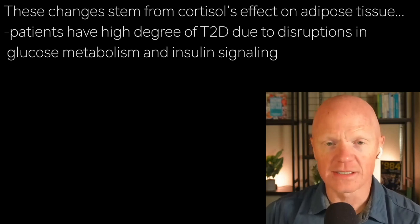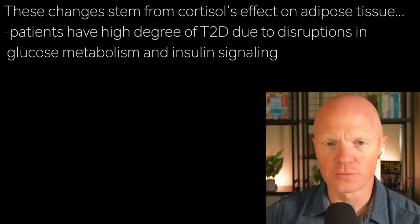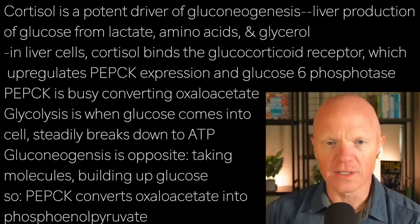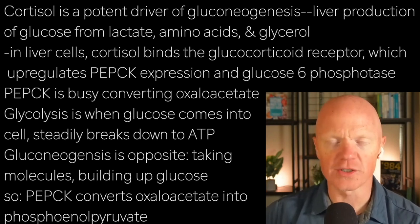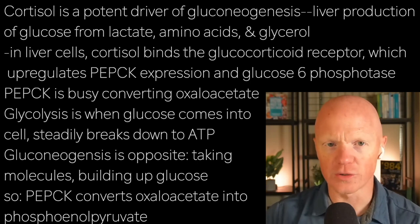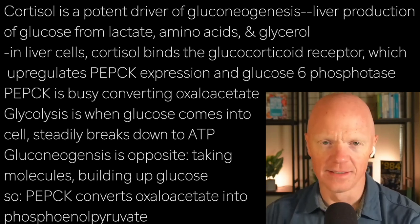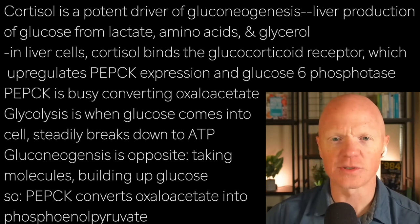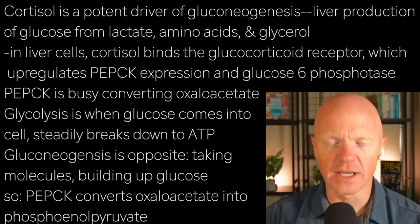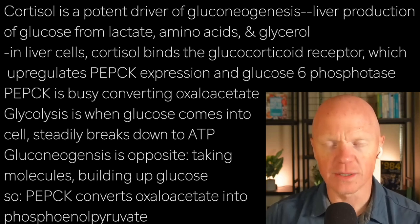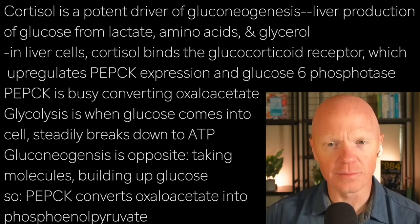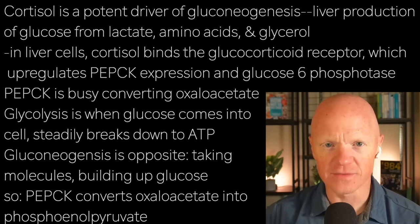The effects are extensive, and I want to touch on the biochemistry as I go through these descriptions. Cortisol is a potent driver — indeed, there's almost nothing equivalent in terms of driving gluconeogenesis, the liver's production of glucose from non-glucose precursors. This includes things like lactate, amino acids, and glycerol — the trifecta, the holy trinity of glucogenic substrates. In liver cells, in hepatocytes, cortisol binds the glucocorticoid receptor, which upregulates PEPCK expression and another important enzyme called glucose-6-phosphatase.